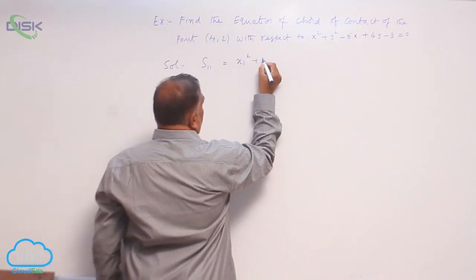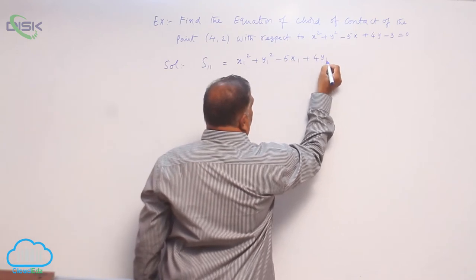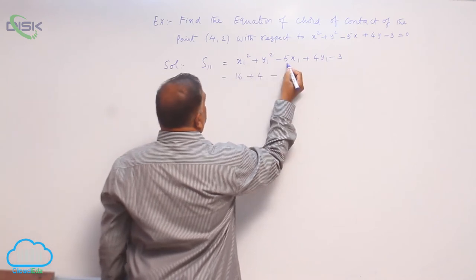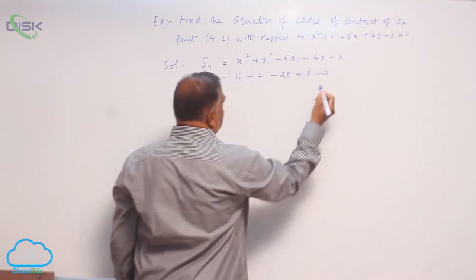Come on, x1 square, y1 square, minus 5x1, plus 4y1 minus 3. This is 16 plus 4, minus 5 into 4, 20. 4 twos are 8, minus 3.